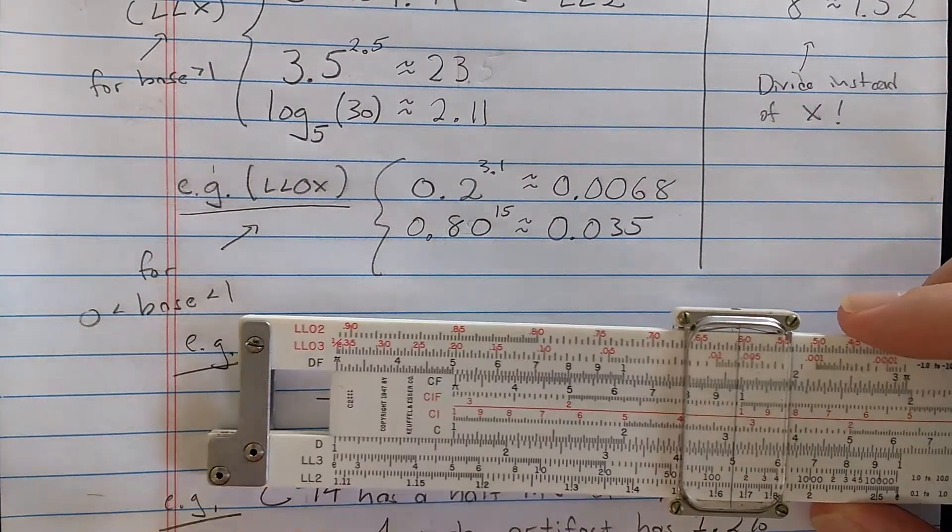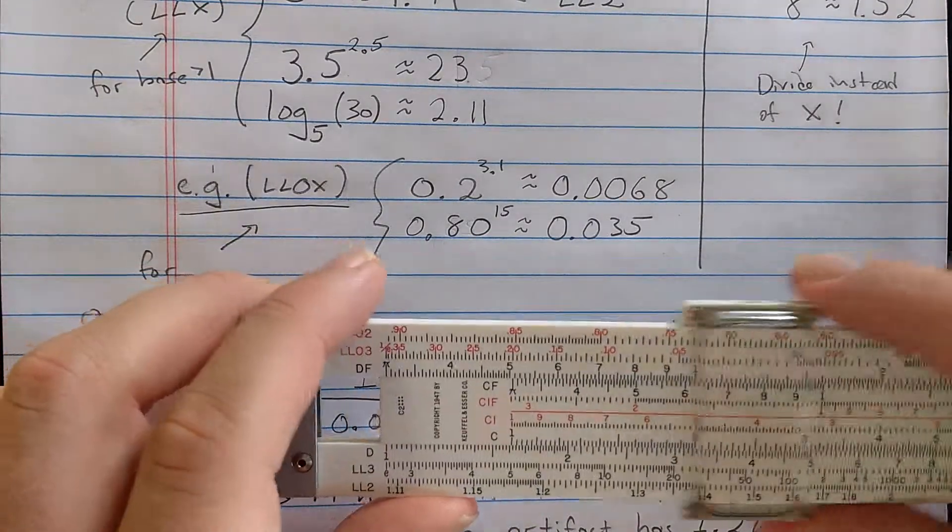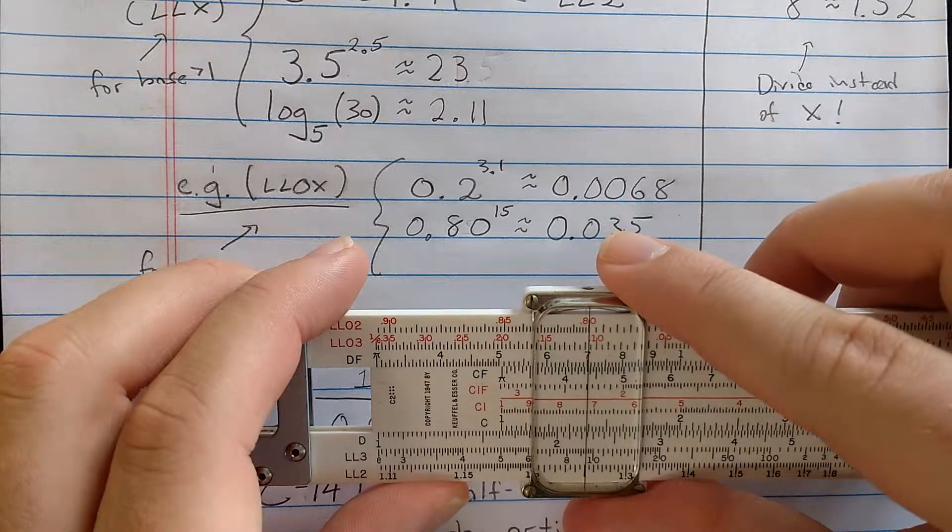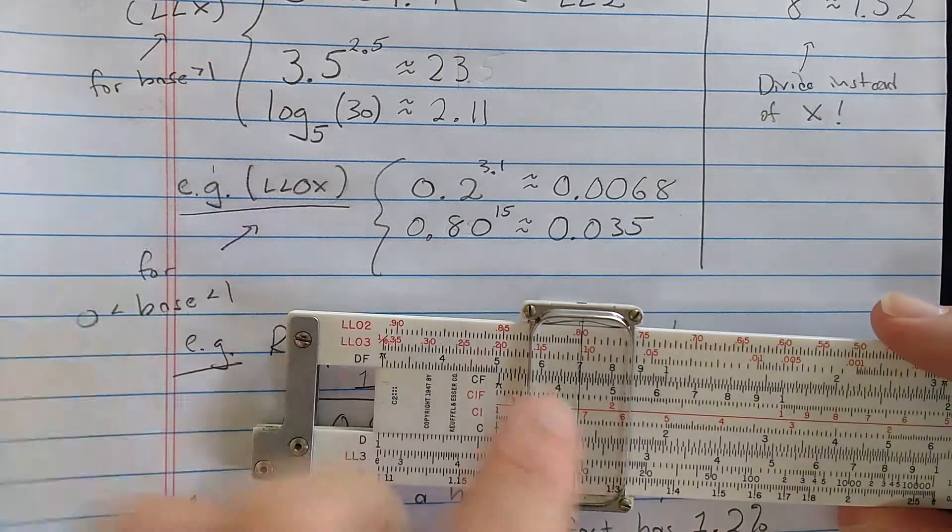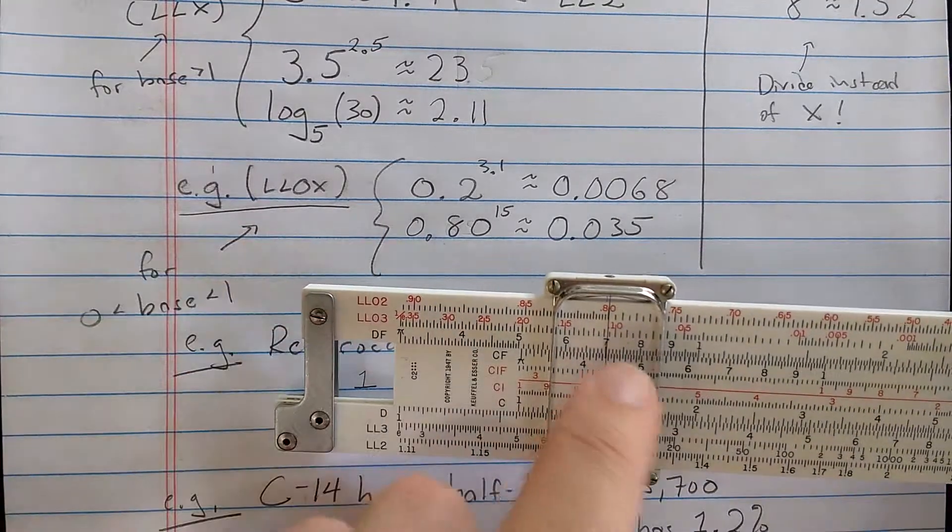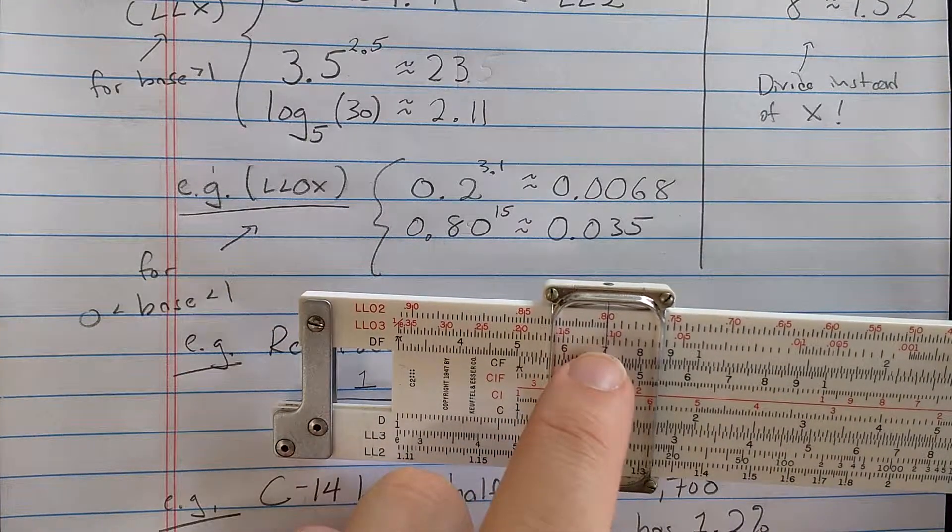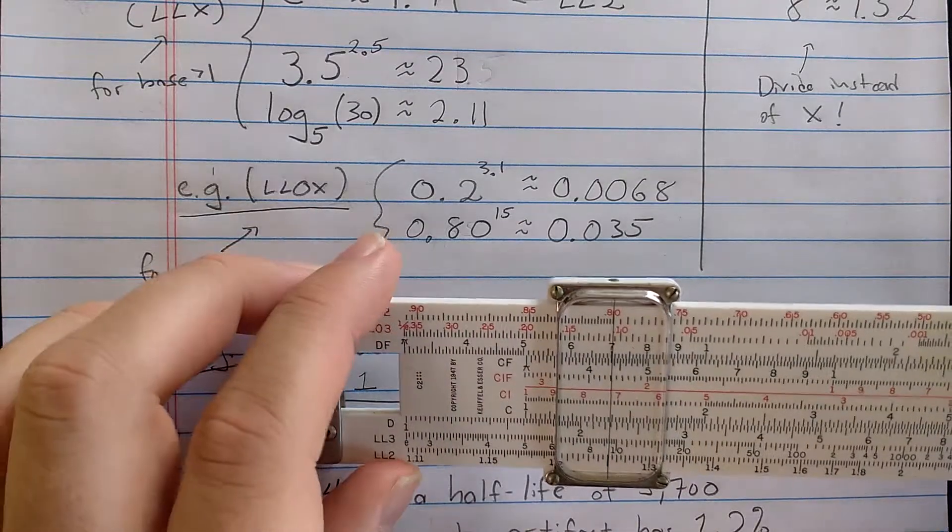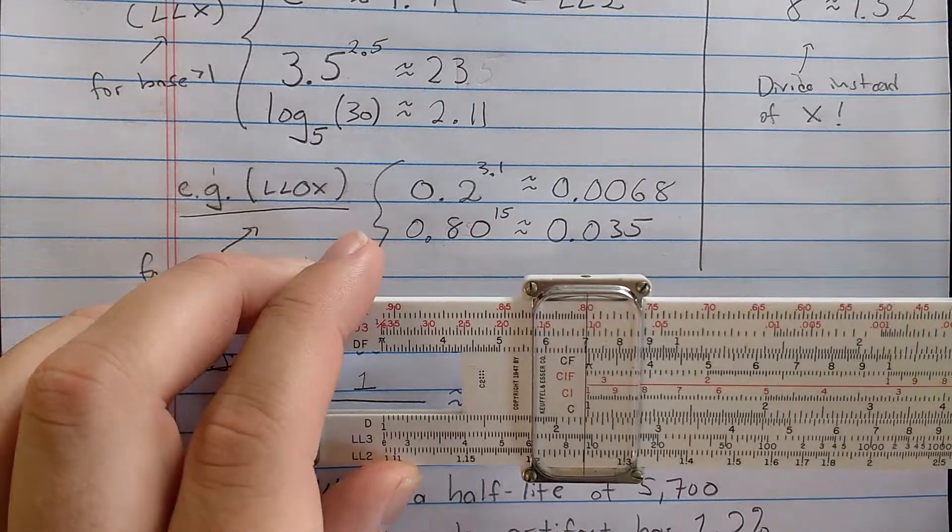Here's the interesting thing. 0.8 to the power 15. How would I do that? Well, let's find 0.8. That's on LL02 up there at the top. Now, if I jump down exactly down to LL03, that's exponent 10. So here's the idea.